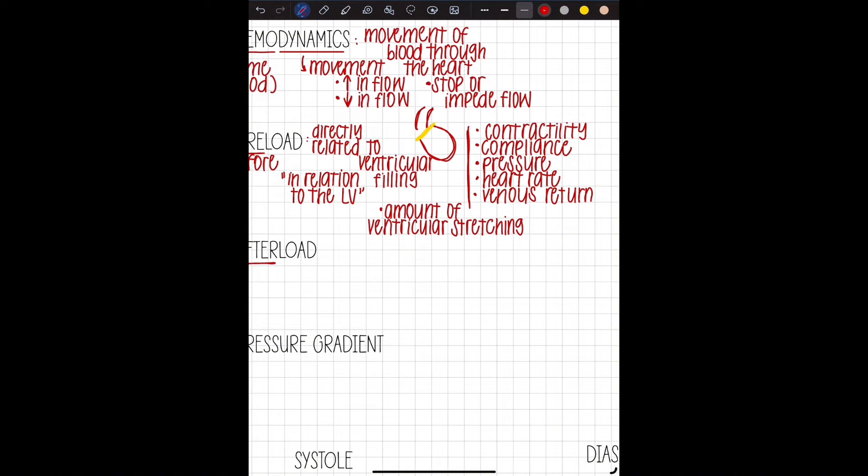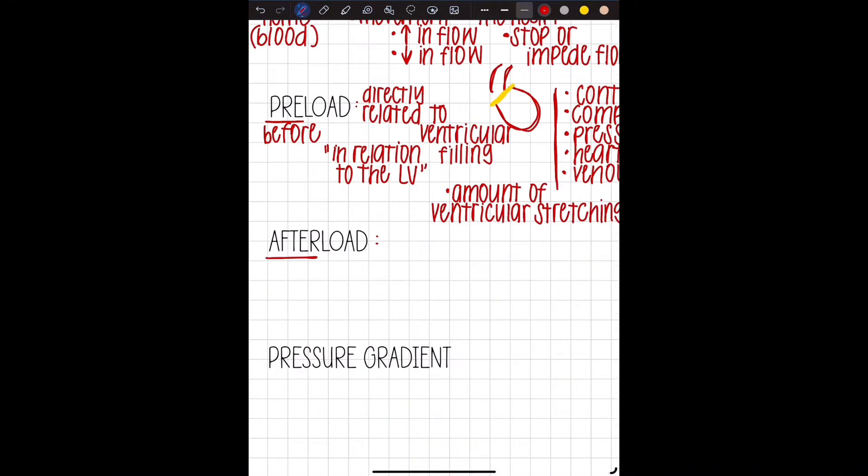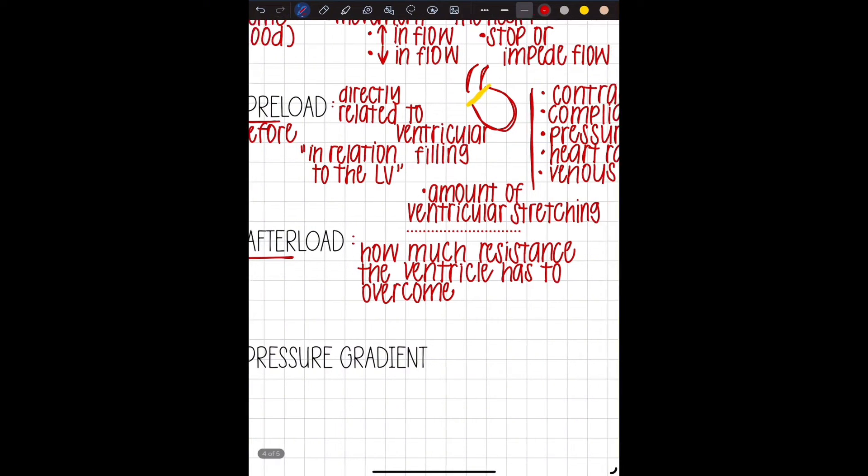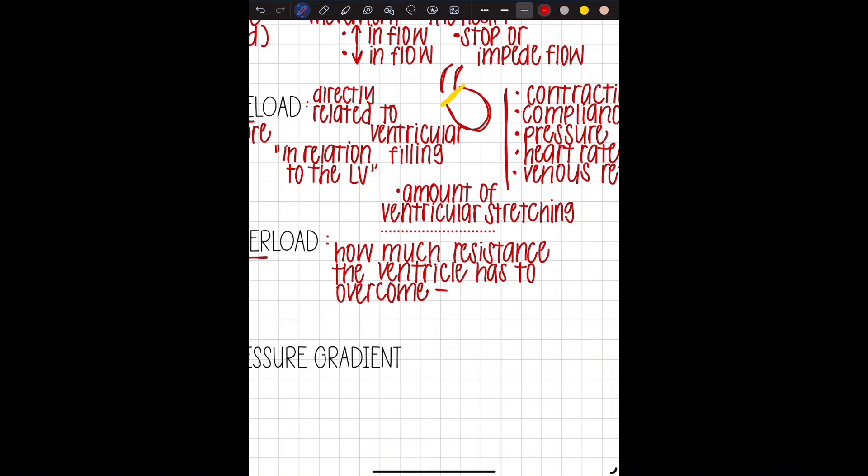The next one we're going to talk about is afterload, which I guess you could say is the opposite of preload. Preload is for filling and afterload is about ventricular contraction. Specifically, this is going to be about how much resistance the ventricle has to overcome. So you might hear about like PVR and SVR, pulmonary vascular resistance, systemic vascular resistance has to overcome in order to keep the forward flow of blood because your body remember like homeostasis, it wants to keep kind of the status quo and the normal.